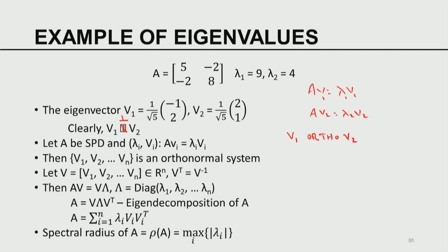So v₁, v₂, ..., v_n is a collection of mutually orthogonal and normalized eigenvectors — it constitutes an orthonormal system. We have already seen the notion of orthonormality in the last class. Now I am going to construct a matrix V which consists of n columns: the first column is the first eigenvector, the second column is the second eigenvector, and so on up to the nth eigenvector. This is an n-by-n matrix.